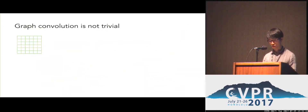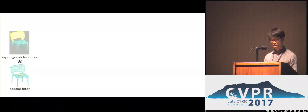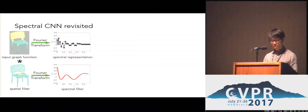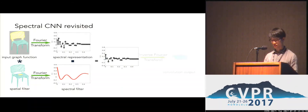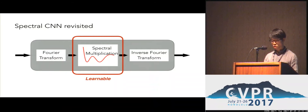Unlike regular grids, which have a translation structure, in a regular graph we cannot naturally move a filter across different places, making directly convolving a graph not trivial. Since directly designing spatial filters to convolve an input graph function is not easy, a very smart design from the literature called Spectral CNN is proposed. It tries to convert spatial convolution into a simple multiplication operation in the spectral domain. Graph functions are converted into their spectral representation through Fourier transform first, then the spectral representation is multiplied by the spectral filter. According to the convolution theorem, this is equivalent to conducting convolution in the spatial domain. We apply an inverse Fourier transform to get the convolution output. The spectral multiplication filters are the learnable part, in analogy to the convolution filters in grid CNN.